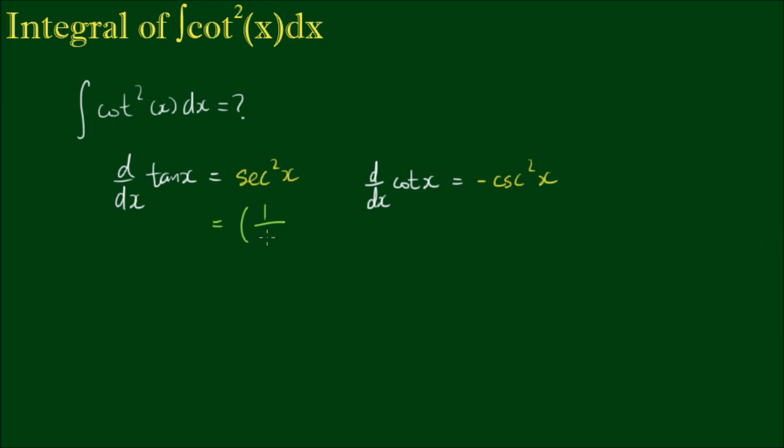And of course, the secant is defined as 1 over the cosine of x. So it's 1 over the cosine of x all squared, so that's what secant squared is.